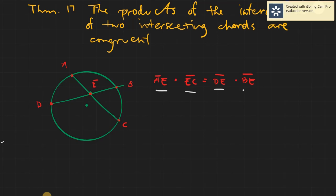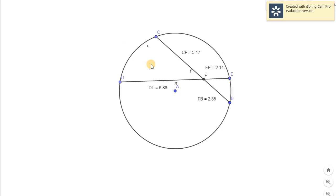You will have simply the products of the part is equal to the products of the part. Your first chord, say we have chord AC, the products of the part of chord AC is equal to the product of the parts of chord DB. And for us to have a better understanding of this figure, let's go to GeoGebra.